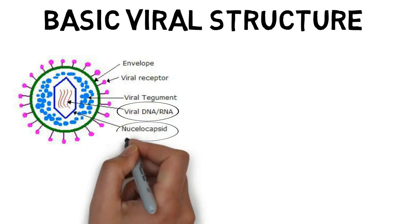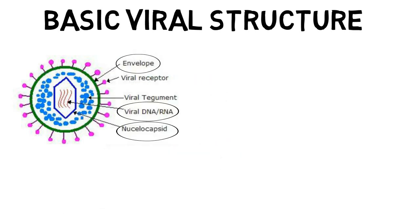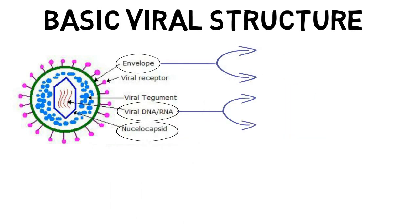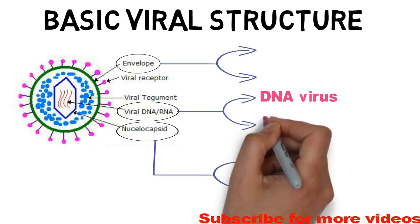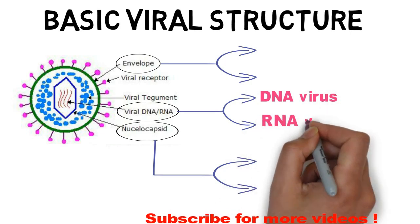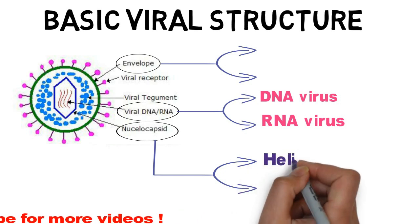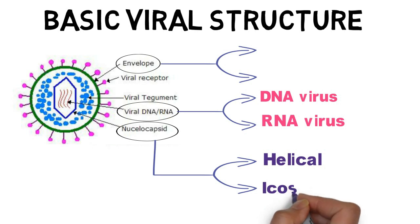The third important viral structure is the envelope. Based on these three structures, viruses can be classified into various groups. Based on the genome, a virus can be a DNA virus or RNA virus. Based on the nucleocapsid, viruses can be helical or icosahedral.